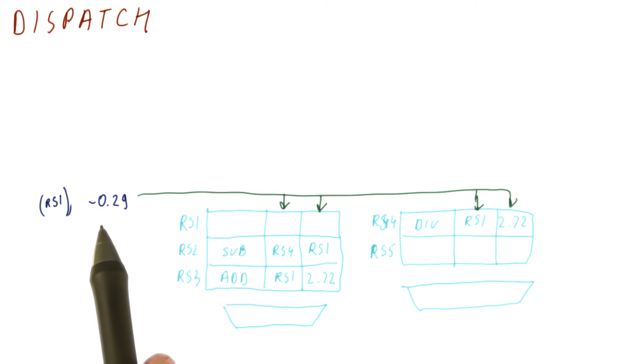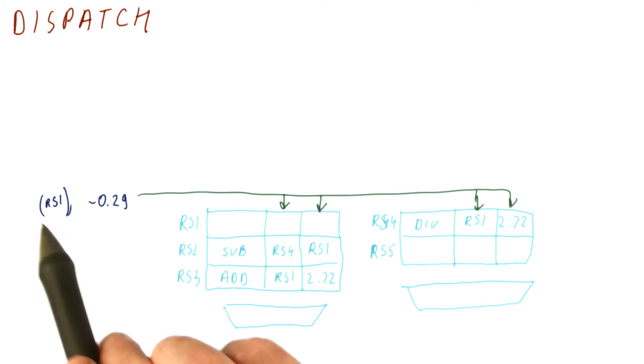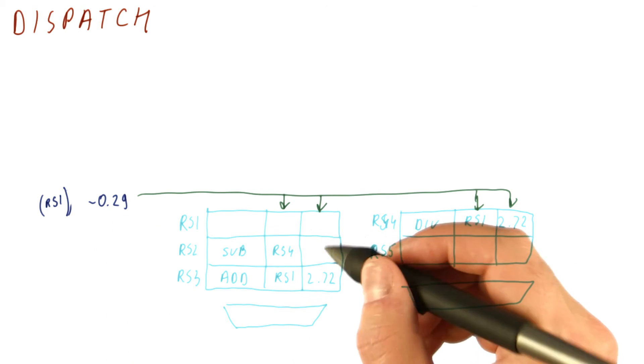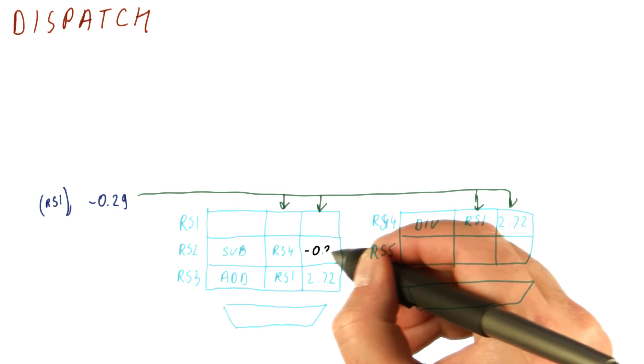The next thing that we're going to do is match this tag against each of the two operands in each of the reservation stations. So what's going to happen is RS4 doesn't match so we're not going to do anything for this. RS1 here does match so instead of RS1 here we are going to use the value of minus 0.29.